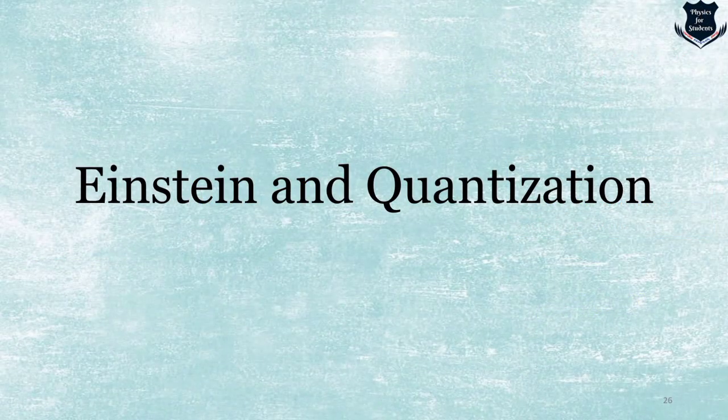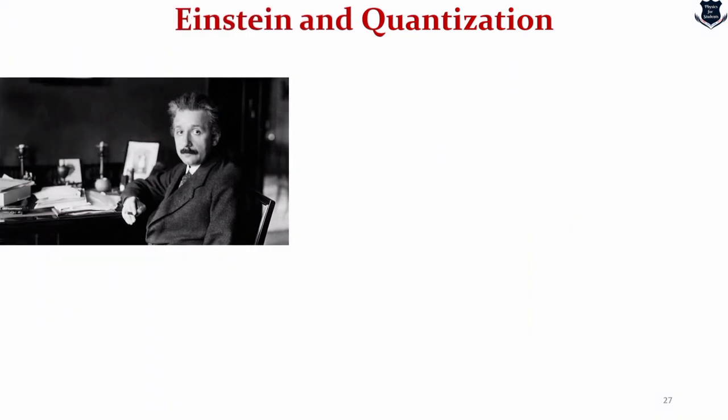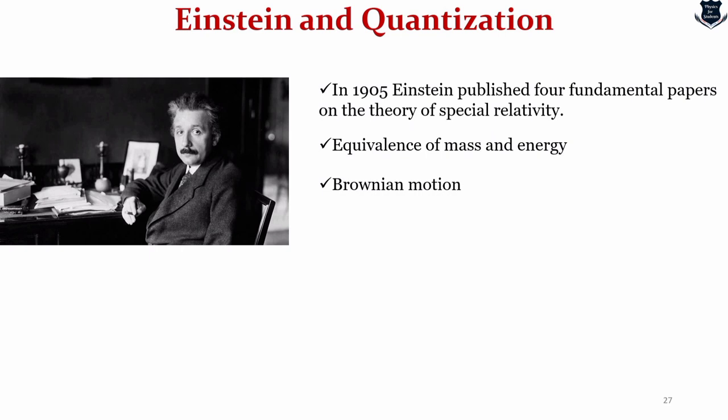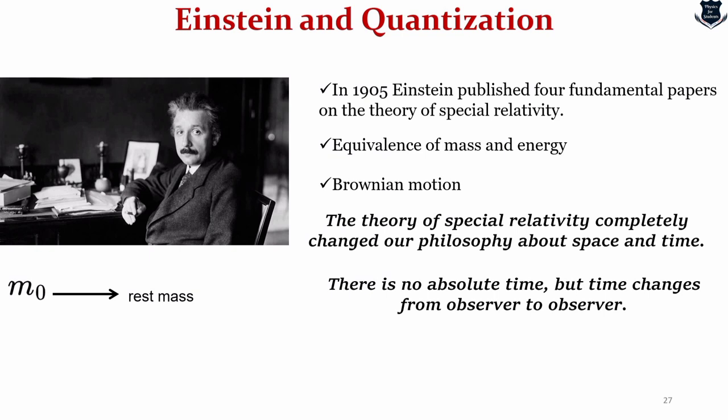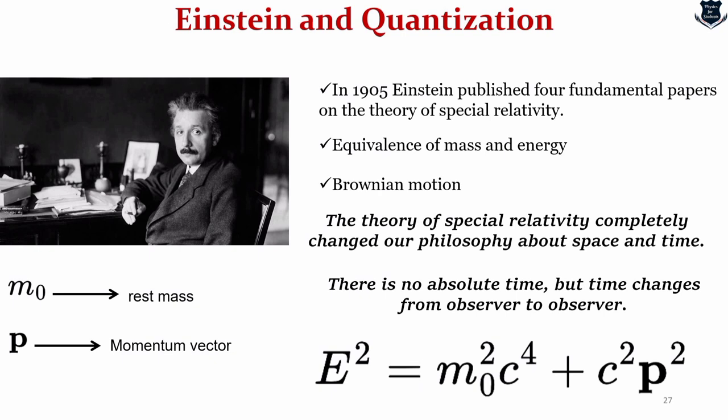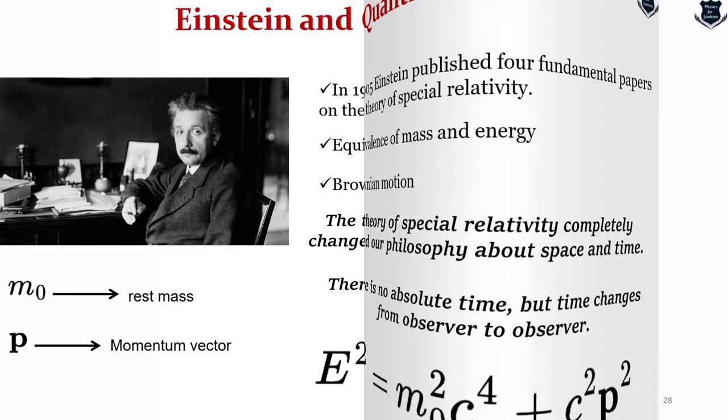Now we come to Einstein and quantization. We know that in 1905, Einstein published four fundamental papers on the theory of special relativity, the equivalence of mass and energy and Brownian motion. The theory of special relativity changed our philosophy of space and time. According to Einstein, there is nothing called absolute time, but time has been changed from observer to observer. This follows from the surprising fact that the velocity of light has the same value in each inertial system.